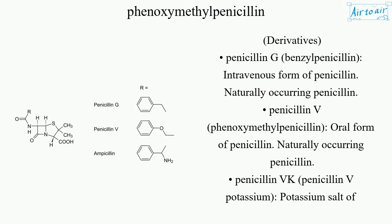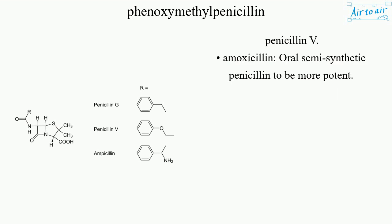Derivatives: Penicillin G (Benzylpenicillin) is the intravenous form of naturally occurring penicillin. Penicillin V (Phenoxymethylpenicillin) is the oral form of naturally occurring penicillin. Penicillin VK is the potassium salt of Penicillin V. Amoxicillin is an oral semi-synthetic penicillin designed to be more potent.